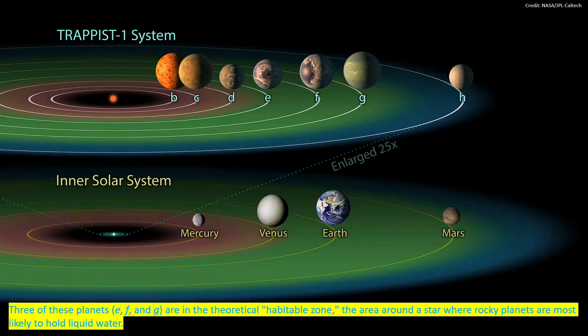Three of these planets, E, F, and G, are in the theoretical habitable zone, the area around a star where rocky planets are most likely to hold liquid water.